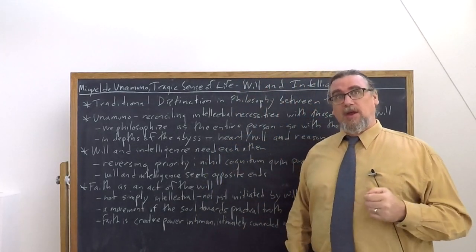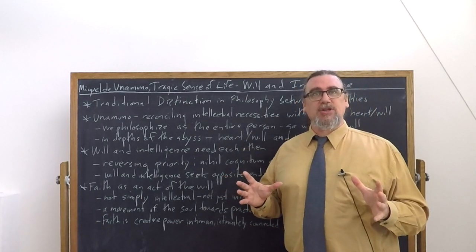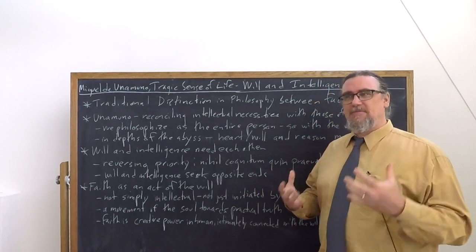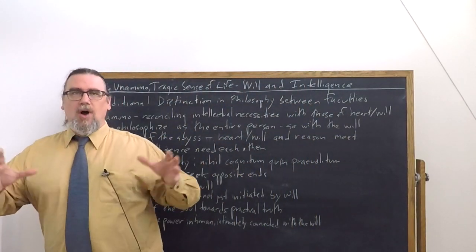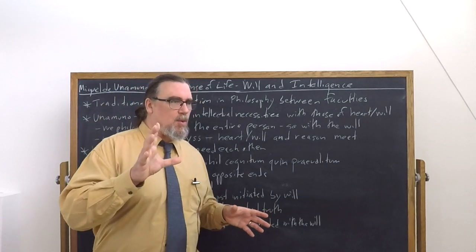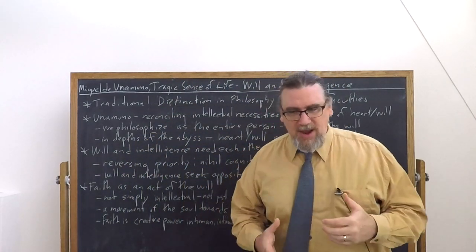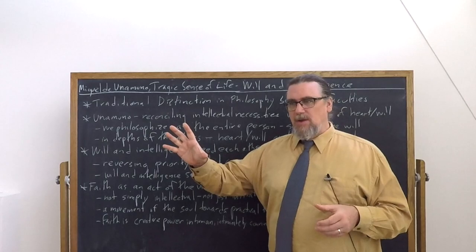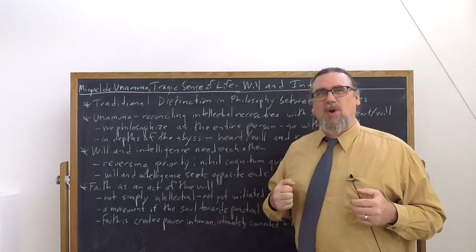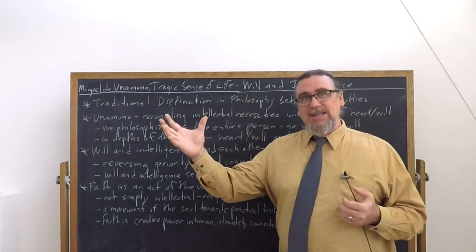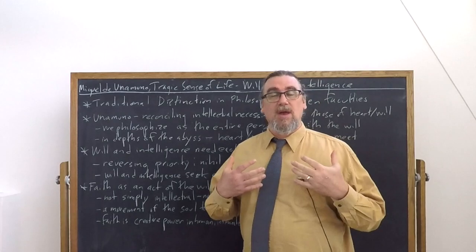At a number of places in Tragic Sense of Life, Miguel de Unamuno is going to discuss the inter-relations between two important faculties of the human being. We could broadly call these the intellectual or rational and the volitional, or the theoretical and the practical. Another way of thinking about this is intellect or reason and the faculty of will. Although Unamuno will also use the term, the heart.